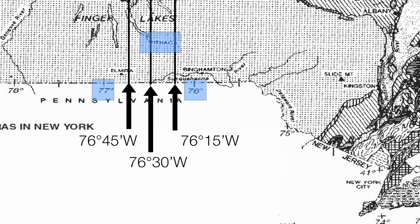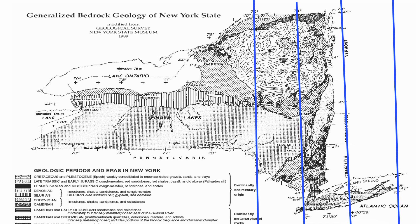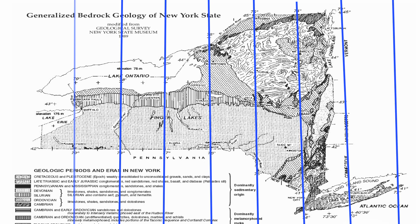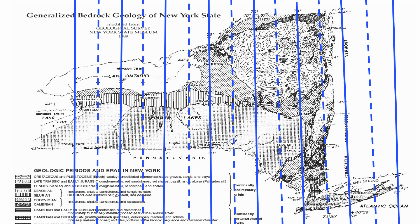If we pan out, the solid lines are going to be my actual degree values of longitude, and the dotted lines are going to represent my 30-minute markers. Again, it makes locating a specific city a little bit more accurate.